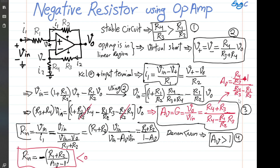As a special case: if R4 over R3 equals R1 over R2 — which violates stability — the denominator becomes zero and Av goes to infinity. In another special case, if R2 goes to infinity (open R2), the R1 over R2 term disappears, and the gain simply becomes 1 plus R3 over R4 — the standard non-inverting amplifier result.